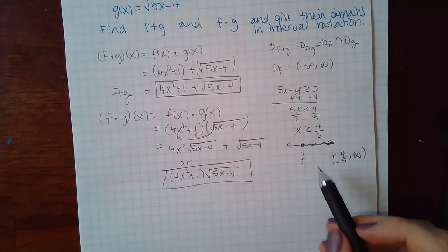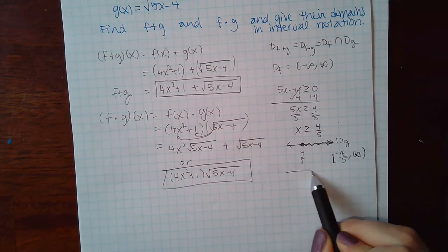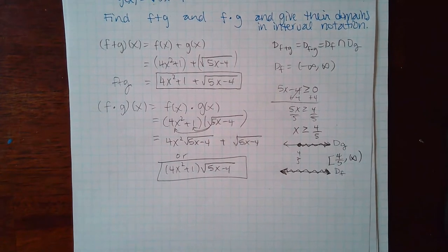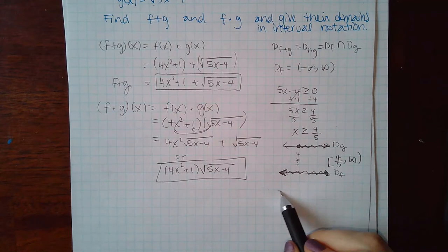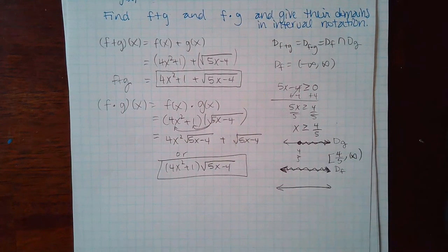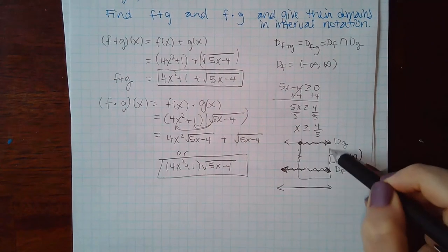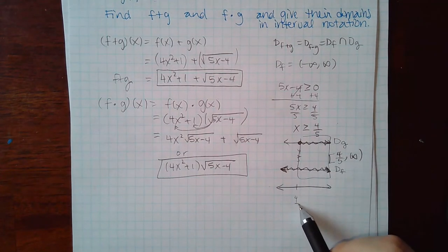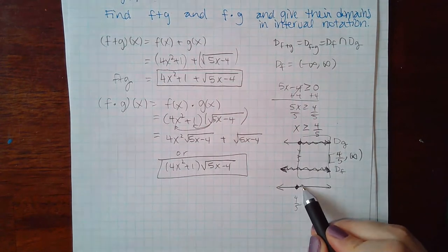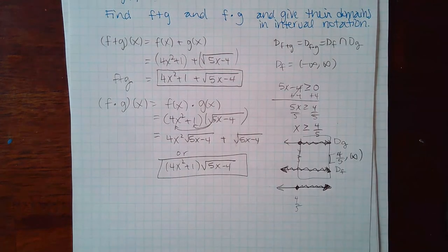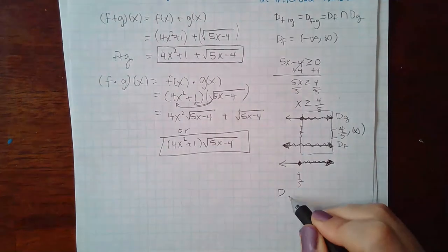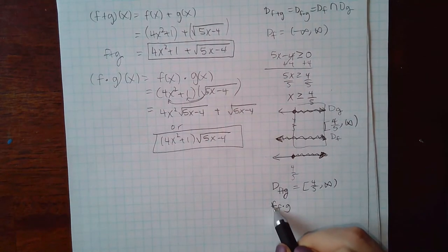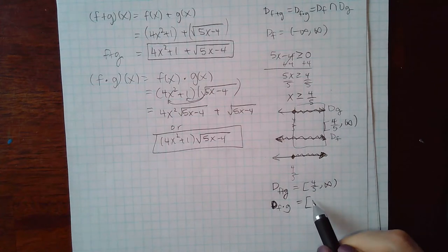The intersection is what both functions share. The domain of f is all real numbers; the domain of g is [4/5, ∞). They overlap from 4/5 to infinity. Since 4/5 is included in both, the domain of f+g and f·g is [4/5, ∞).